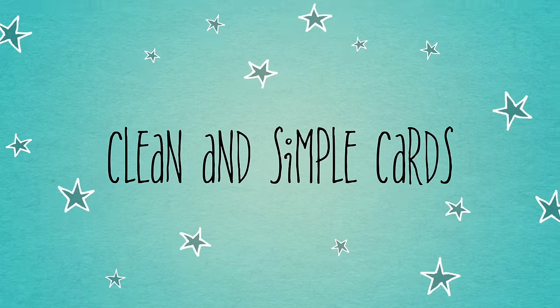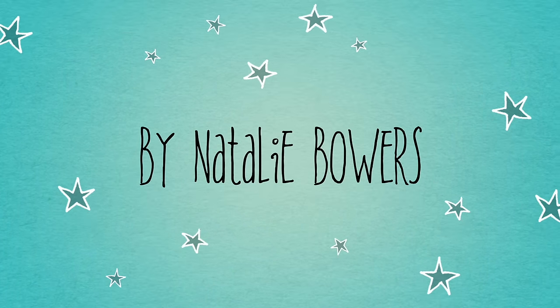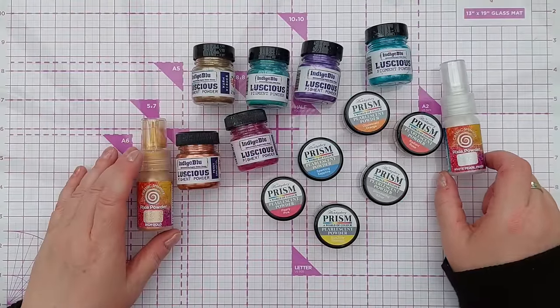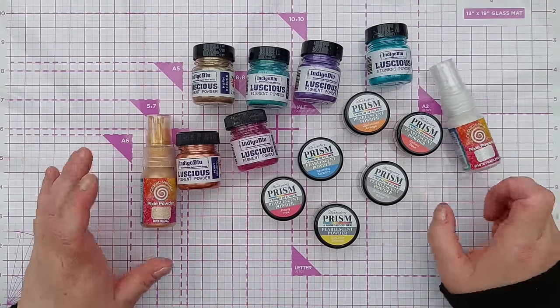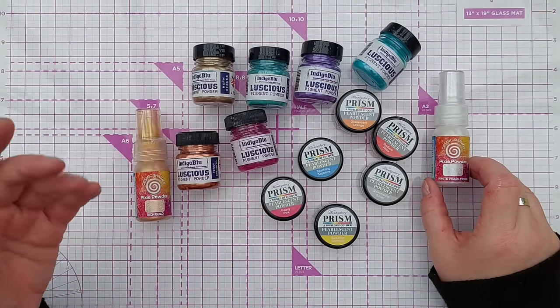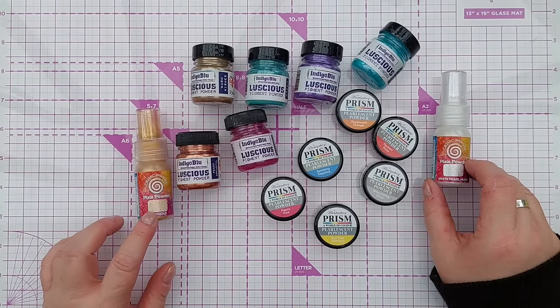Hello crafty friends, welcome to today's installment of Pigment Powders 101. Today we're going to be looking at stamping with pigment powders. These are the pigment powders that I have in my stash: Indigo Blue Luscious Powders, Cosmic Shimmer Pixie Powders, and Hunky Dory Prism Pearlescent Powders, but you use whatever you have available to you.